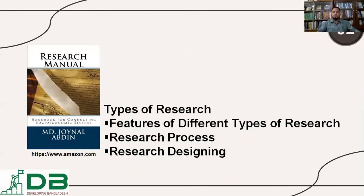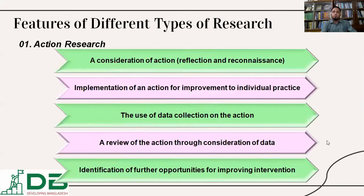So, this was the first part about the types of research. Now let's come to the point of why these types of research should be known in depth. When we select a particular topic for conducting research, we must know what sort of research would be best suited for getting the optimum outcome from that research. To do this, we have to study the features of each sort of research. So, in the next part, let's start with action research.